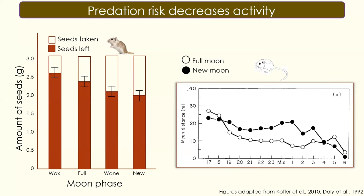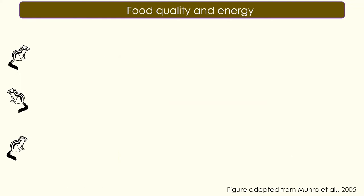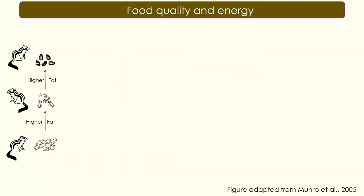These inactive and active periods wouldn't make sense without understanding the energy available to regulate those processes, so we need to look at food quality as well. Fat plays a huge role in regulating body temperature, since fat is what's burned to fuel changes in body temperature. Researchers studied thermoregulation patterns of chipmunks in response to food quality, giving three groups consecutively higher fat content diets: a control group on beet seeds, another on peanuts with higher fat content, and another on sunflower seeds with even higher fat content.